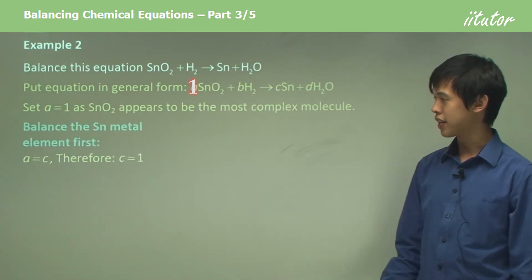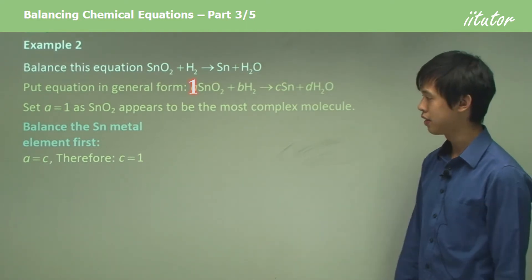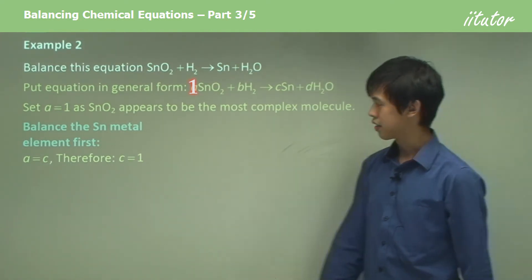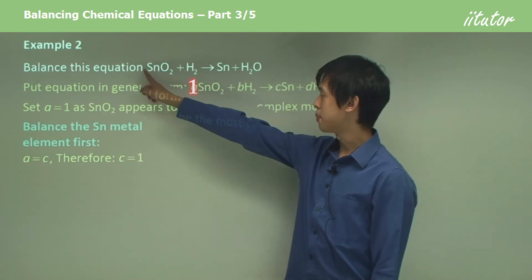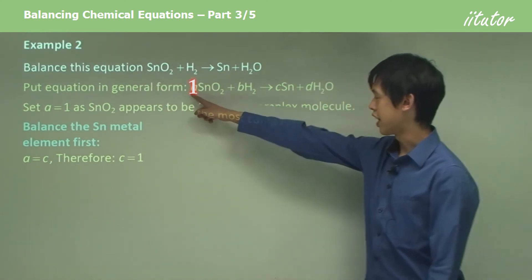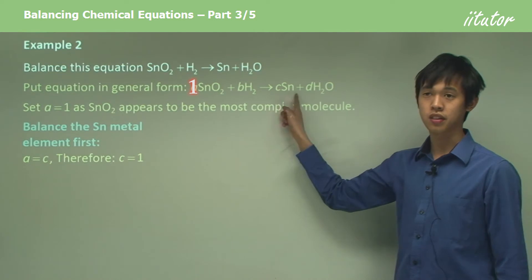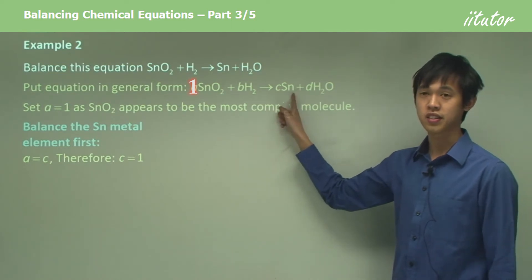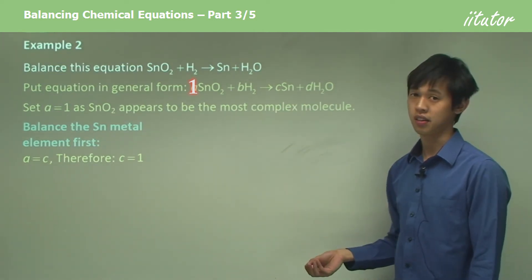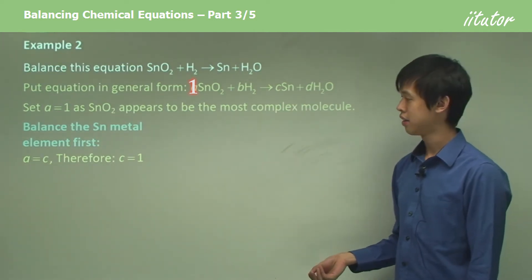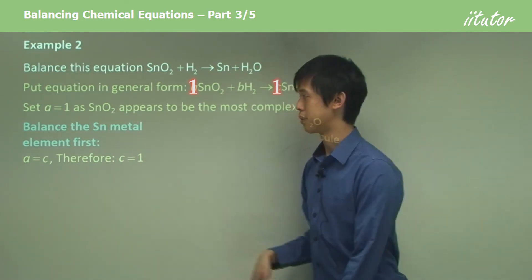So we balance the Sn, the tin, first. If we have A numbers of Sn on this side and C numbers of Sn on the other side, we need A to equal C. Therefore, C also equals 1, because we know A equals 1.